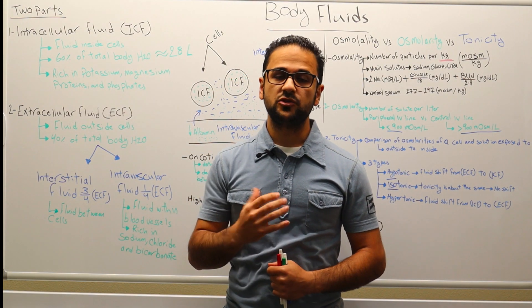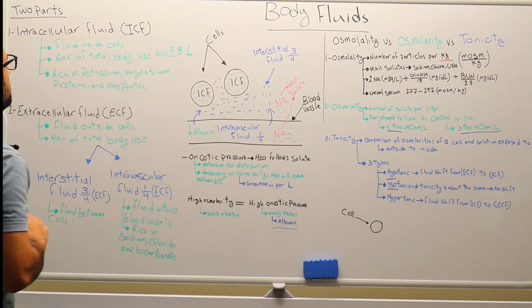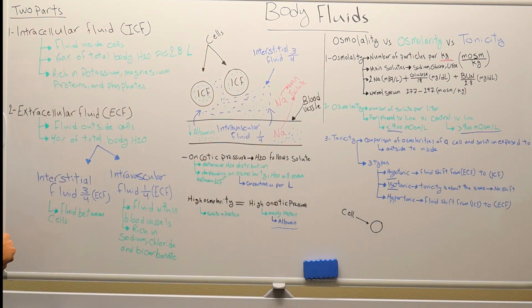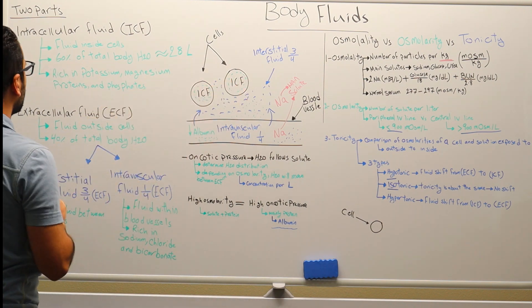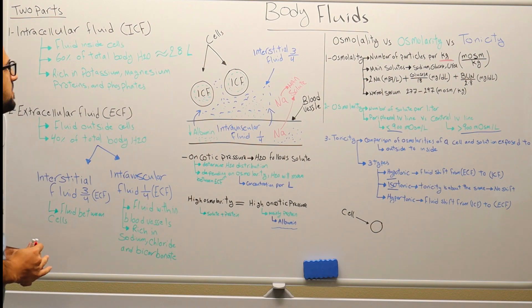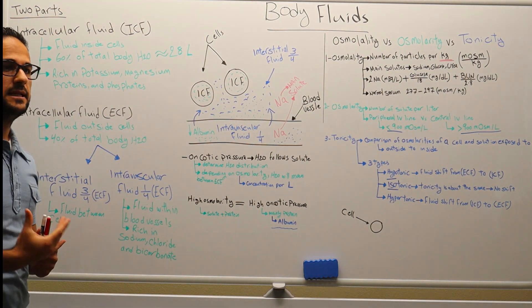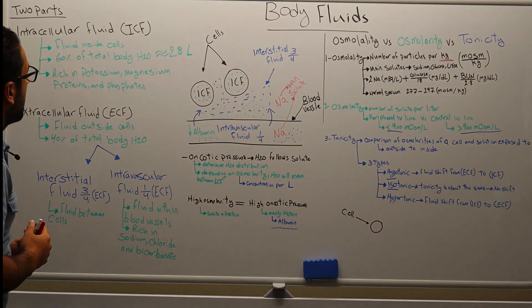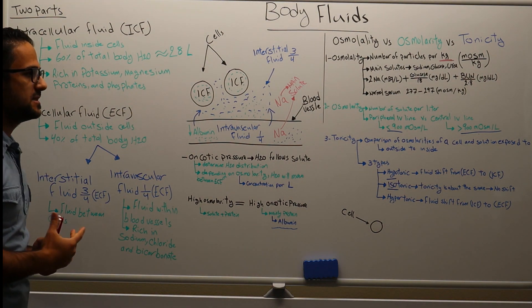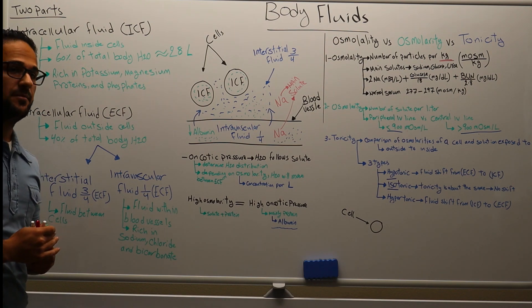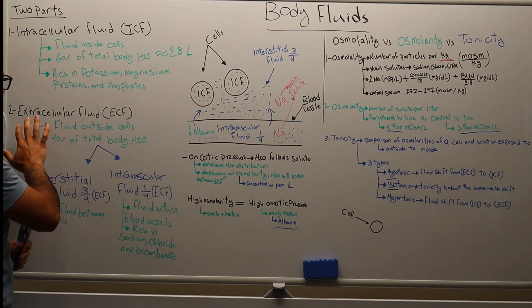Body fluid is divided into two parts. Part number one is the intracellular fluid, which is mainly inside the cells. It is composed of 60% of the total body water, which comes to about 28 liters, and it is rich in several solutes — for example, potassium, magnesium, phosphate, and protein.